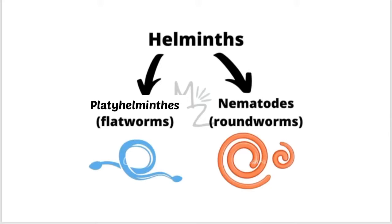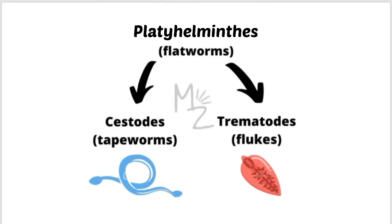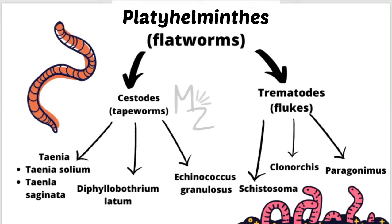Next ones are nematodes. These are called roundworms. In the figure you can see the roundworms and the flatworms. Platyhelminthes, the flatworms, are further classified into cestodes, also called tapeworms, and trematodes, also called flukes. In today's video I'll give you an introduction to cestodes or tapeworms.